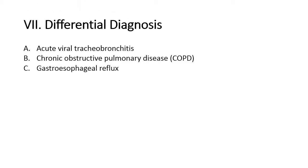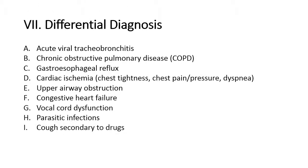Differential diagnosis: A. Acute viral tracheobronchitis. B. Chronic obstructive pulmonary disease. C. Gastroesophageal reflux. D. Cardiac asthma. E. Upper airway obstruction. F. Congestive heart failure. G. Vocal cord dysfunction. H. Parasitic infections. I. Cough secondary to drugs. J. Eosinophilic pneumonia.